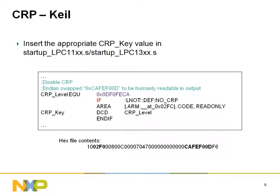In the Keil environment, edit the appropriate startup assembly file and define the CRP symbol with your desired value. In my example, I'm using CafeFood, which is not a registered CRP constant, to ensure that CRP is disabled. Here, you do not need to declare a constant in the body of your application.